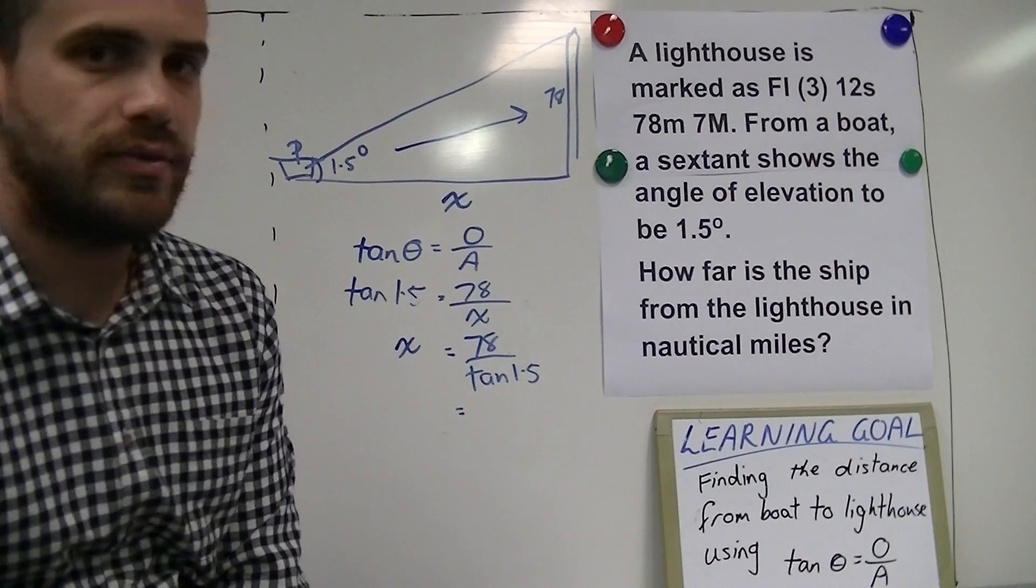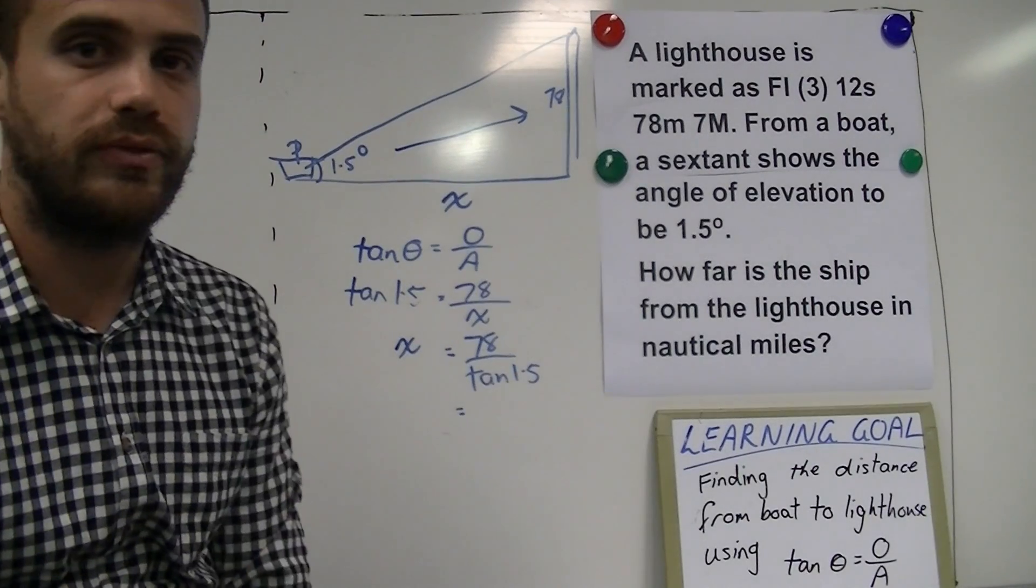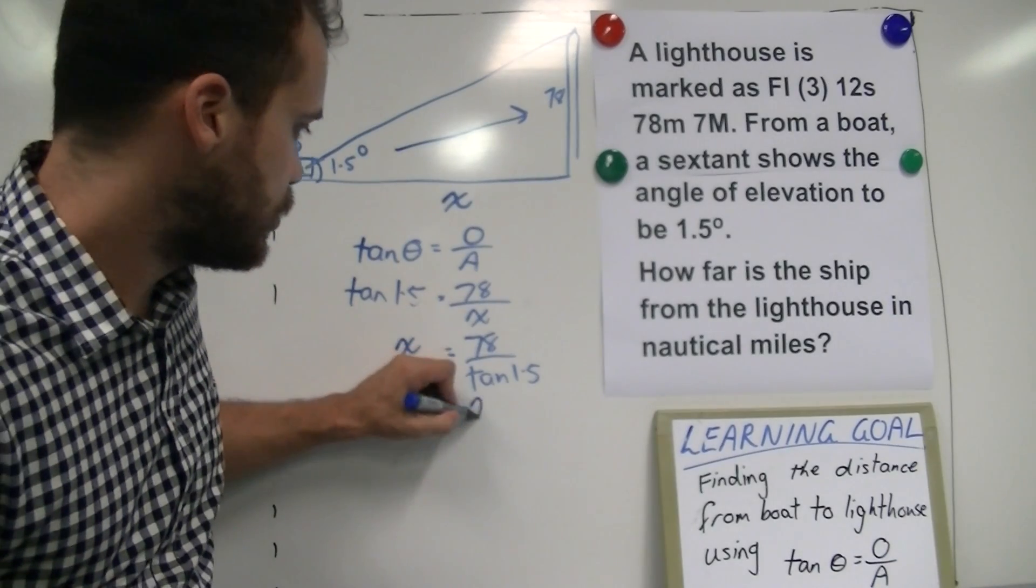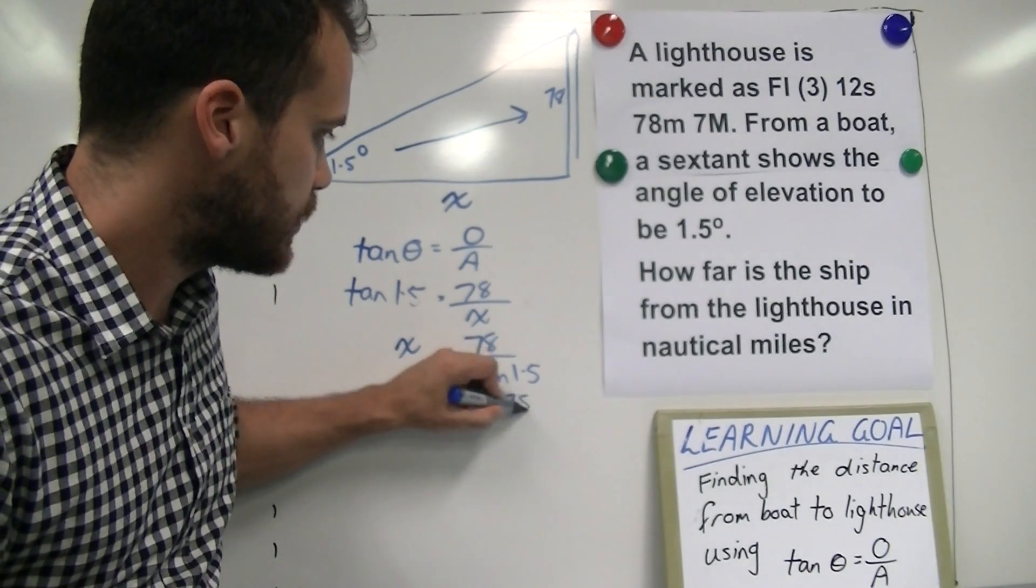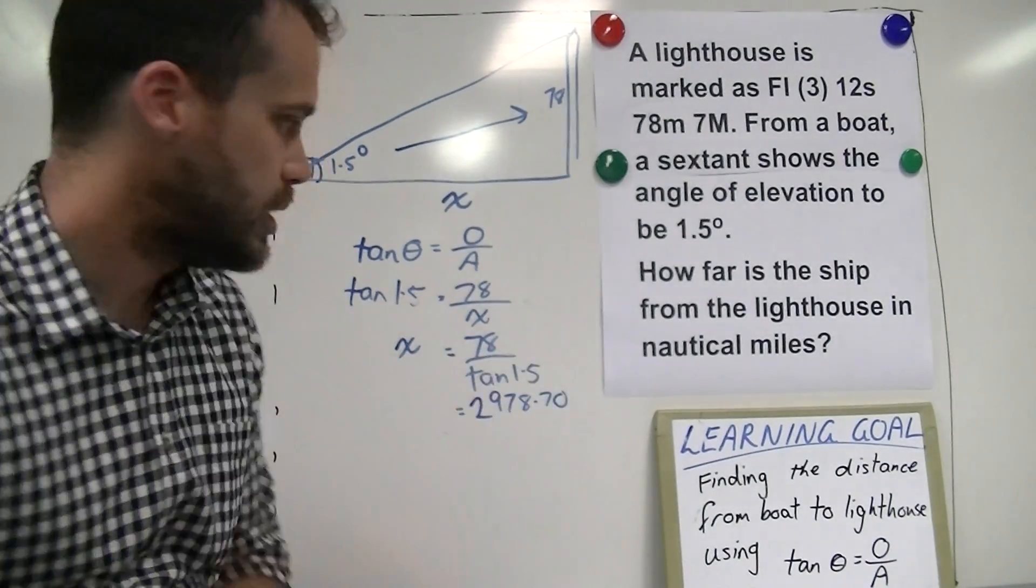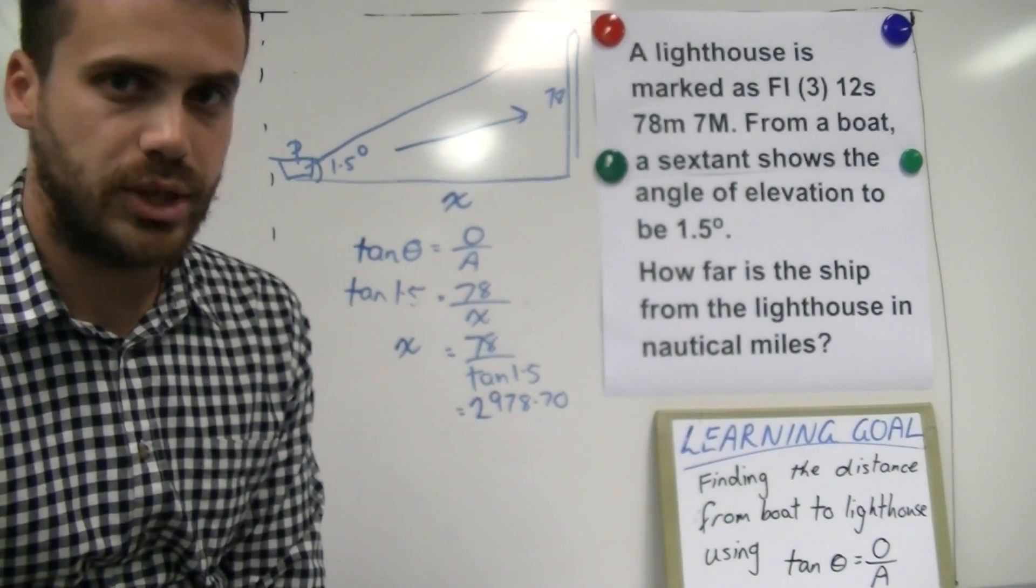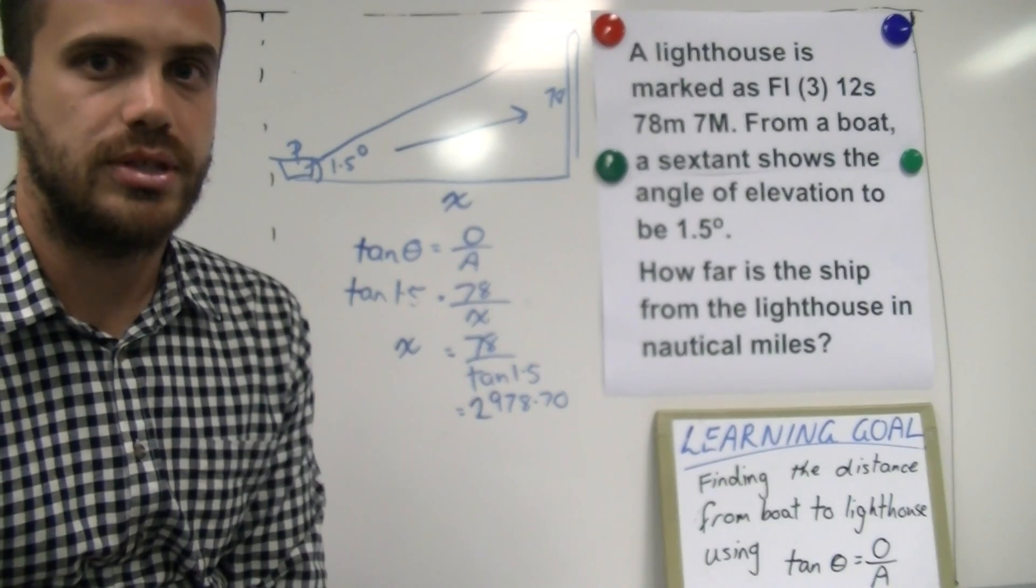Now if you take 78 over tan 1.5 and type that into your calculator, you should get an answer of 2978.70. If you get a different answer, check your calculator to make sure that it's not in radians. Make sure it's in degrees mode.